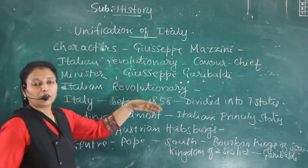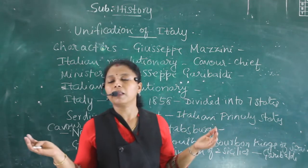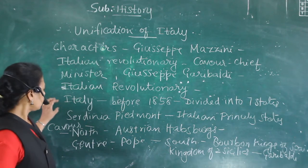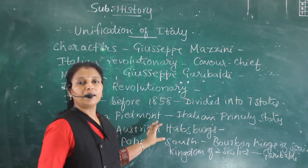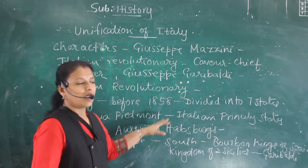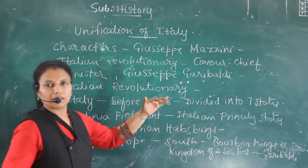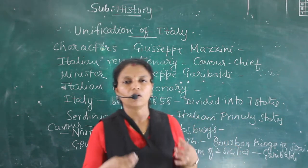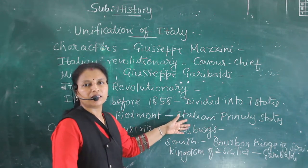During the revolution they wanted to unify Italy because it was ruled by different kings. In that process, Cavour — the chief minister — participated and led a movement. He marched against the Austrian Habsburgs with his army, defeated them, and the northern part was joined with Sardinia-Piedmont, the Italian state. The Austrian Habsburg emperor was defeated by Cavour.